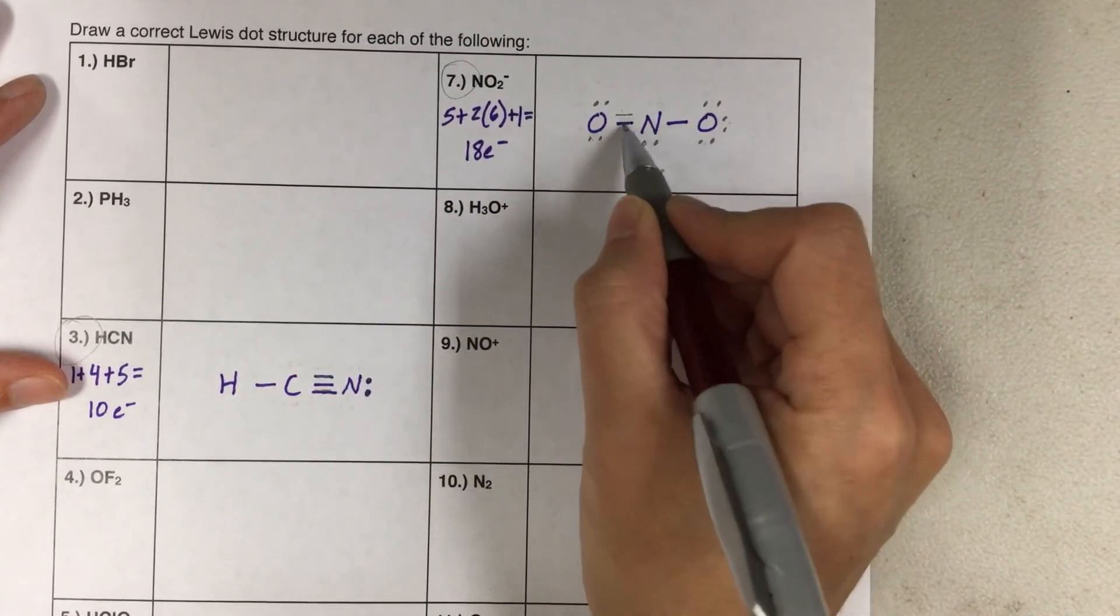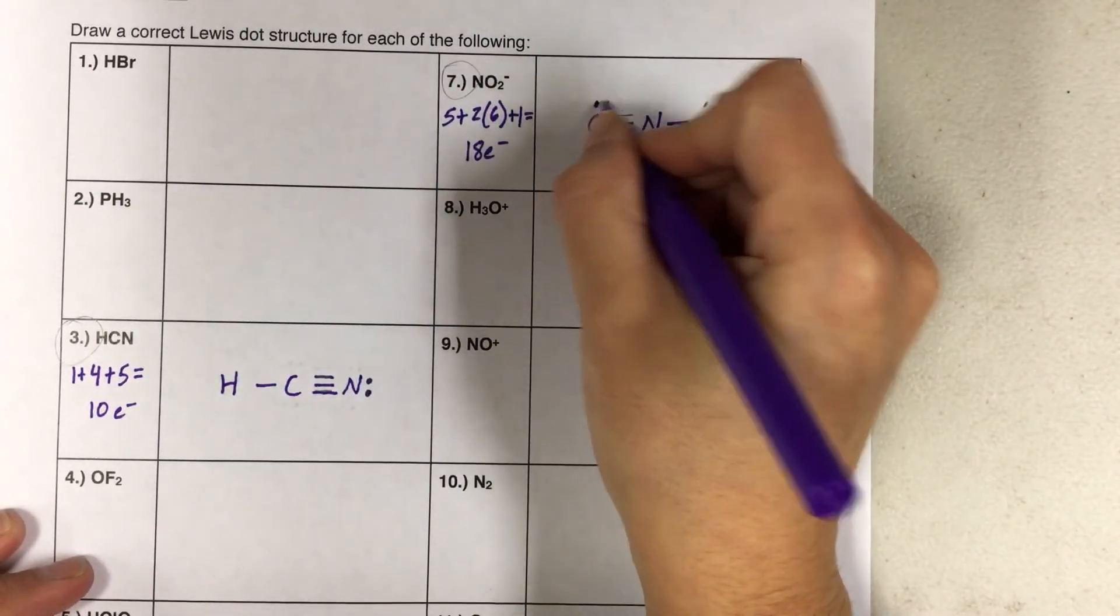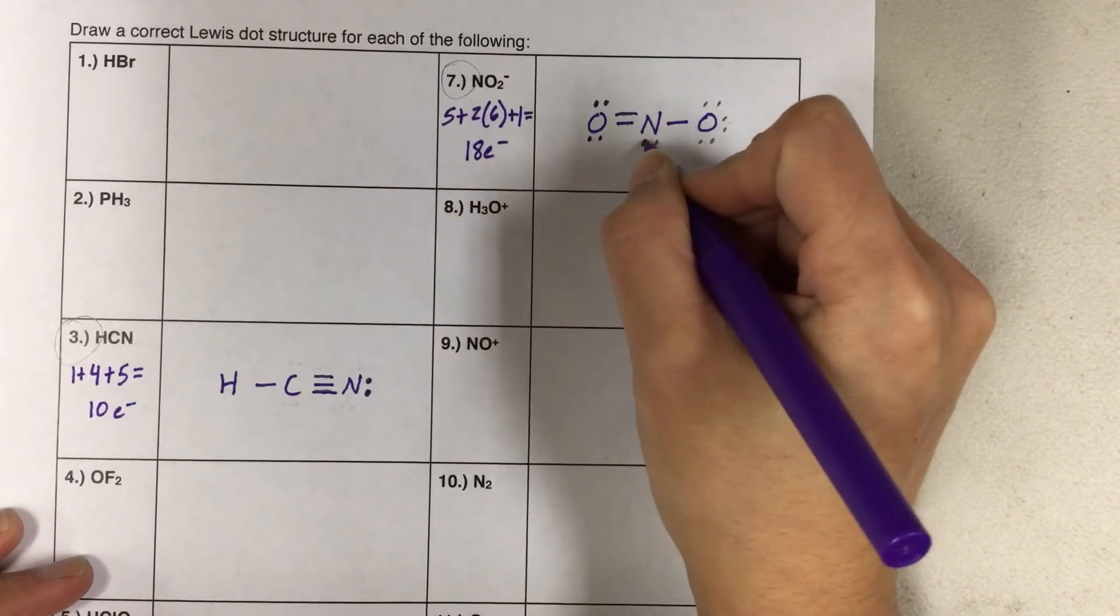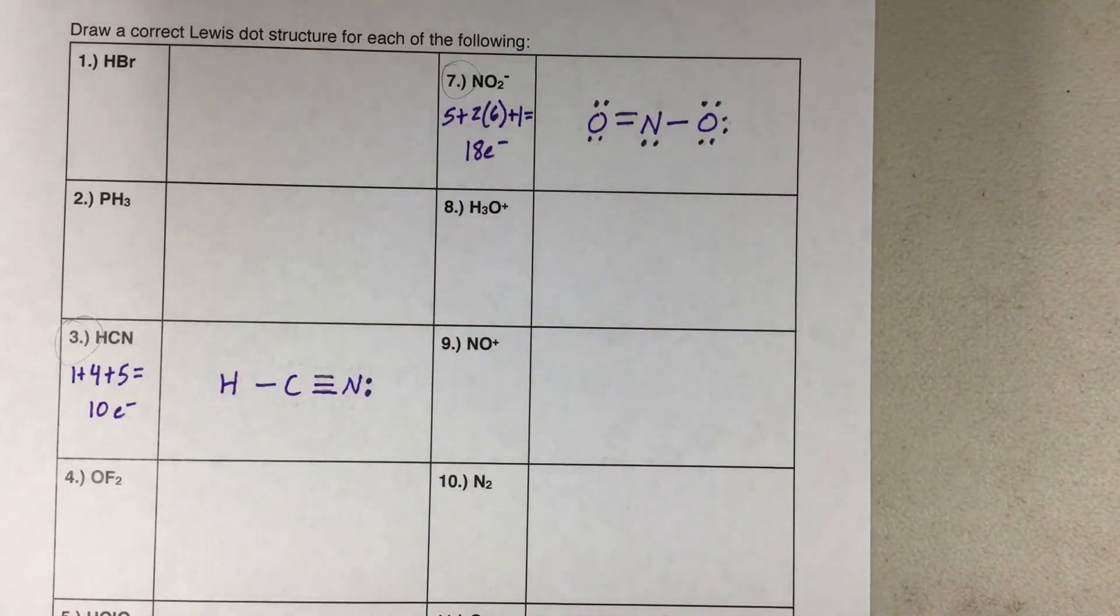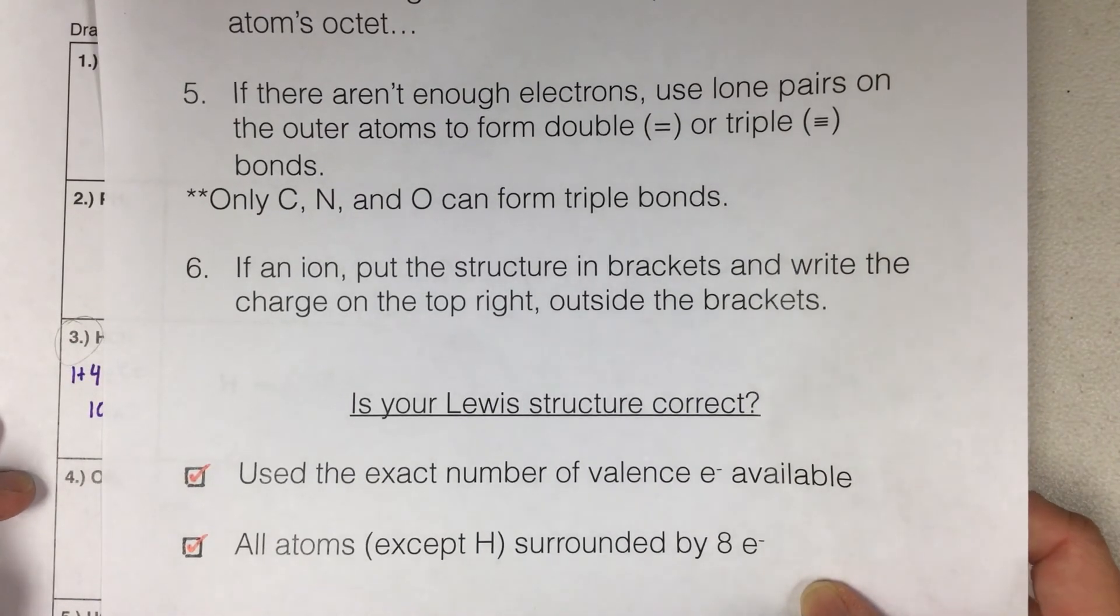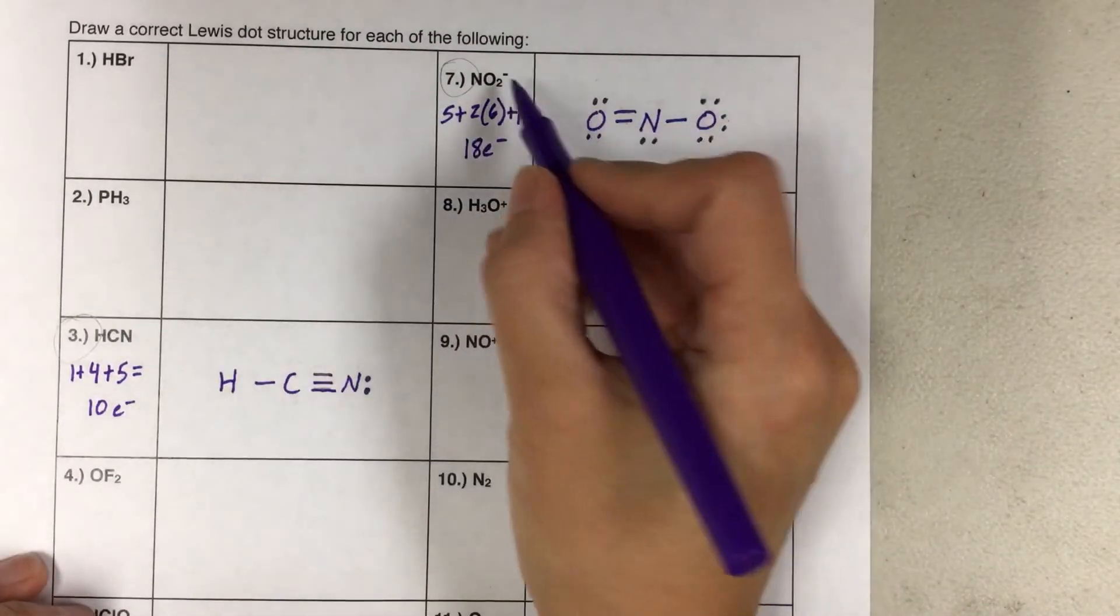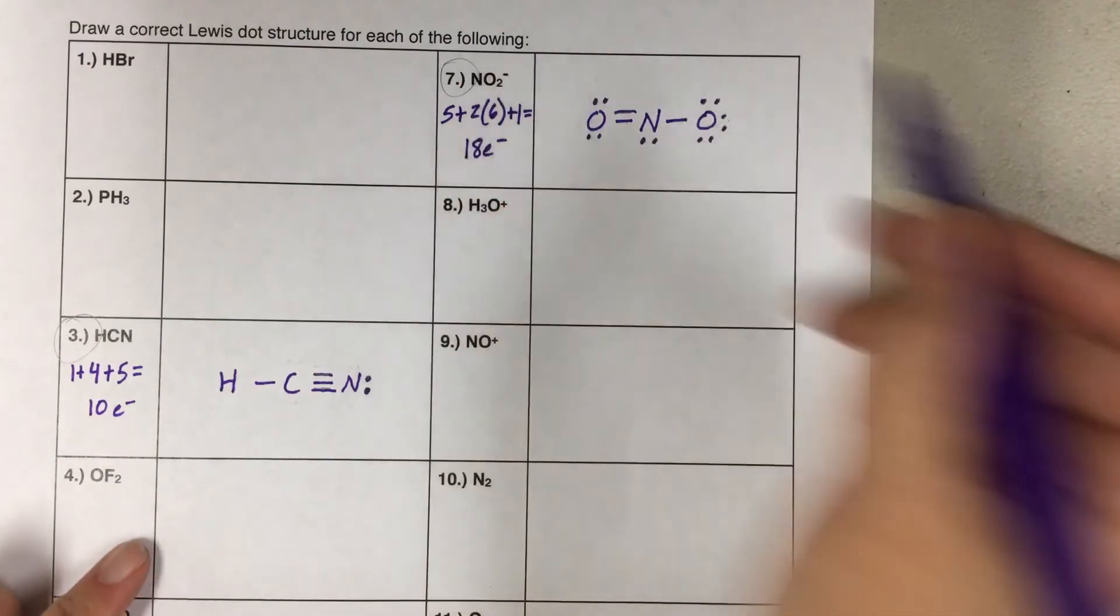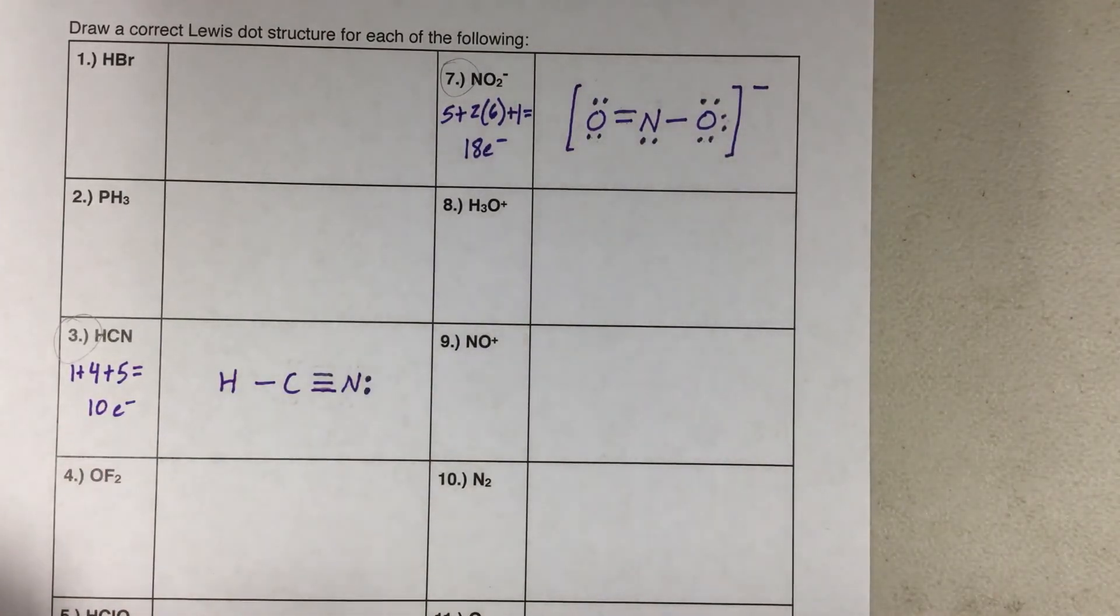2, 4, 6, 8 for oxygen. 2, 4, 6, 8 for nitrogen. 2, 4, 6, 8 for oxygen. But we're not done yet. Step 6. If an ion, put the structure in brackets and write the charge on the top right outside the brackets. We didn't do that. This has a charge. The other one didn't, so we didn't have this step. But this one has a charge, which means we have to put it in brackets and then write the charge up there. The brackets tell you that it has a charge. Done.